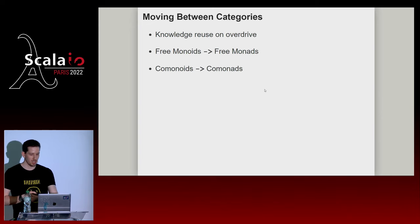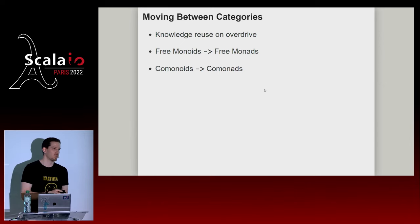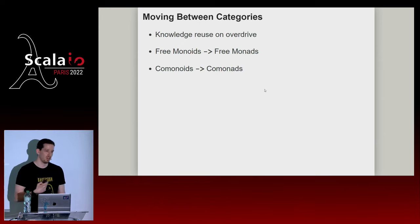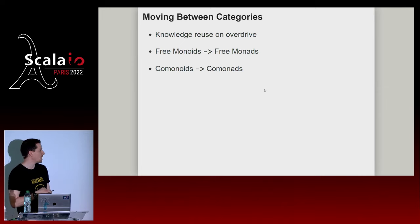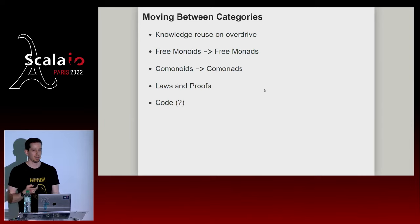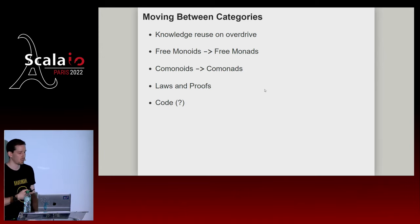So before we had a monoid in the category of types, but now we have a monad in the category of endofunctors, which gives rise to the now infamous quote: a monad is just a monoid in the category of endofunctors. We can even define the regular flat-map we're familiar with using these things. Moving between categories is a way to reuse knowledge on overdrive — once you do this transformation, you get things for free.